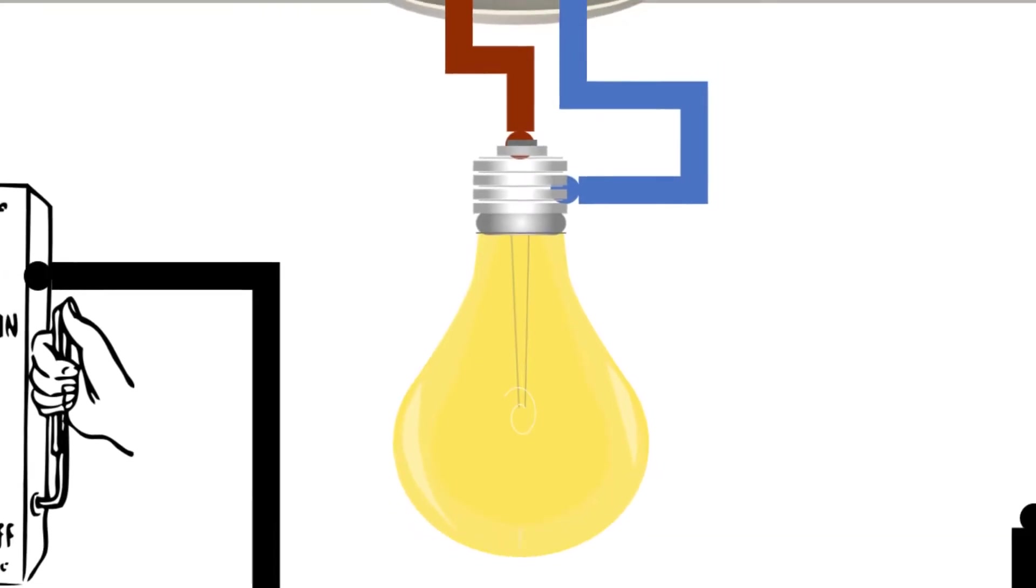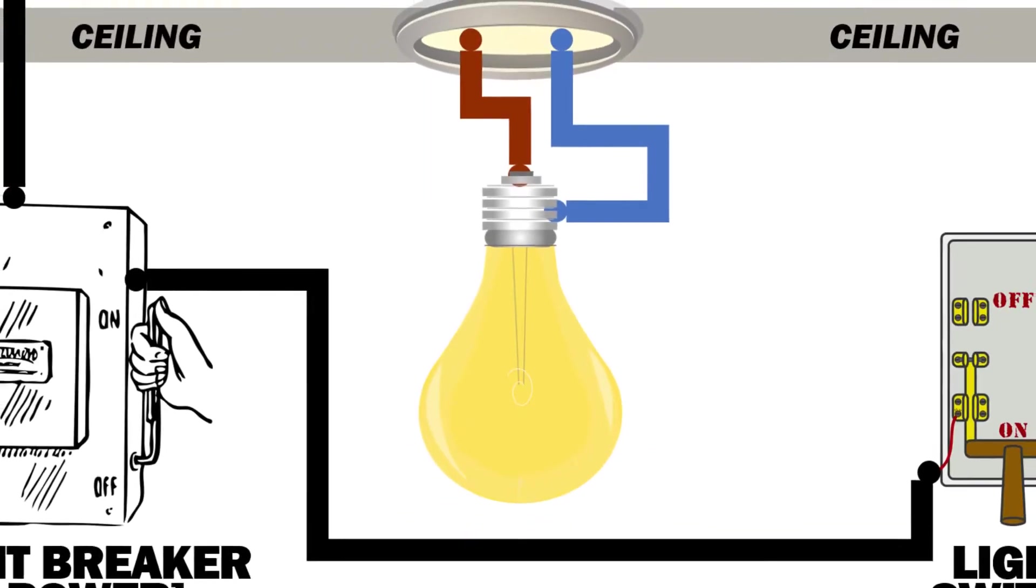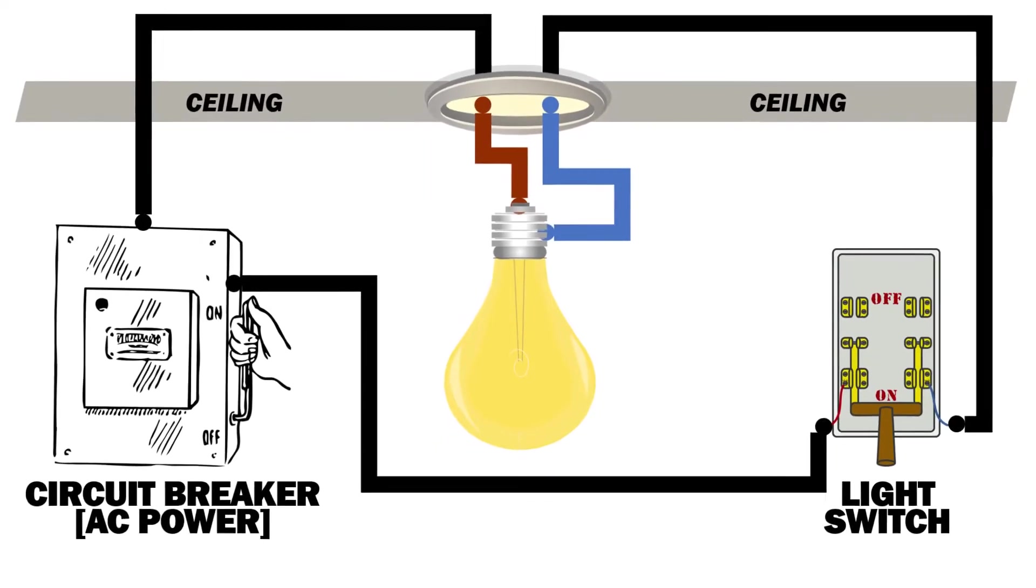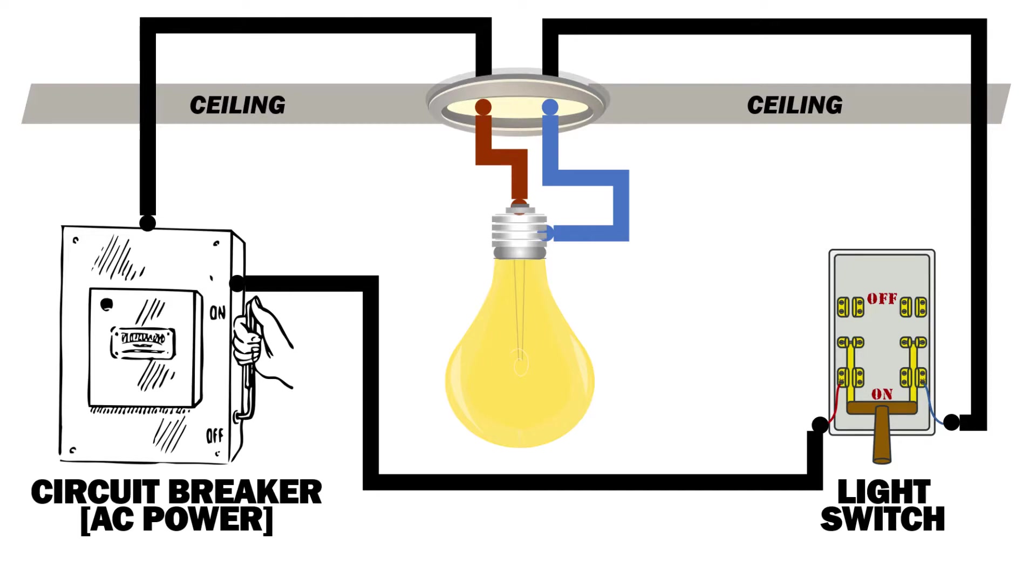Before I can explain what a parallel circuit is and its advantage over a series circuit, let's start with a basic single bulb setup. Connected to the bulb, or more accurately to its socket terminals, is a brown wire and a blue wire. The actual colors of the wires may be different, and I'm just using brown, blue, and black for illustration purposes.